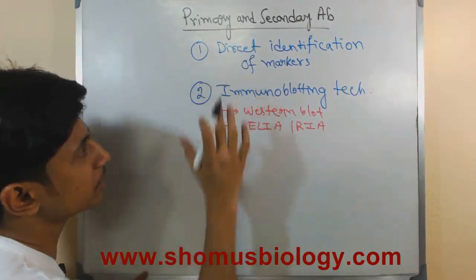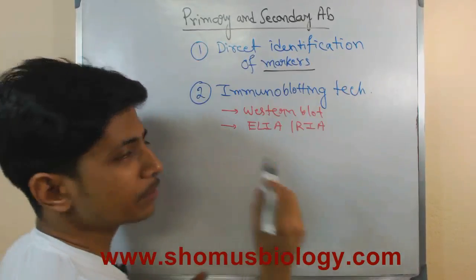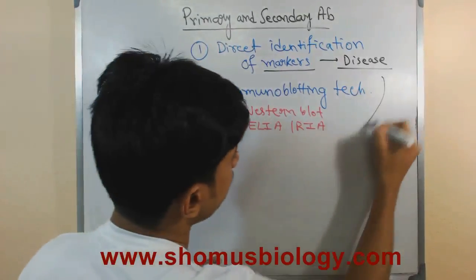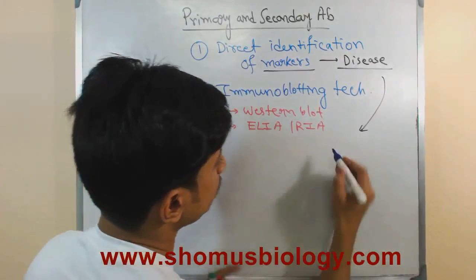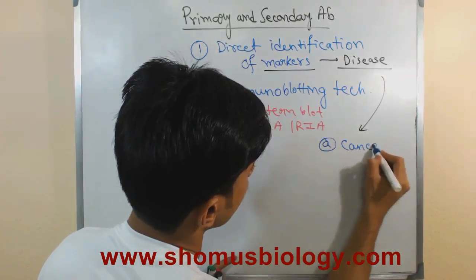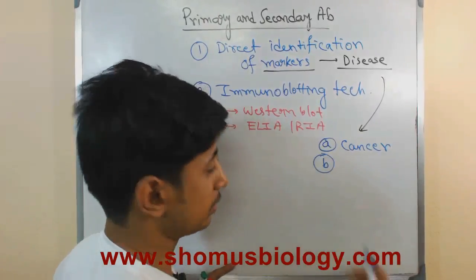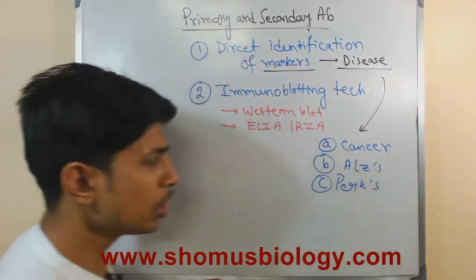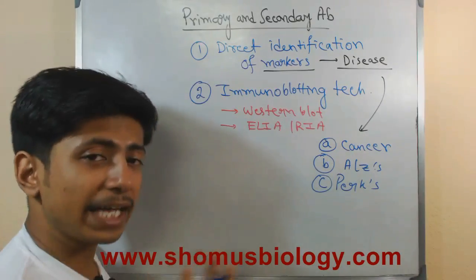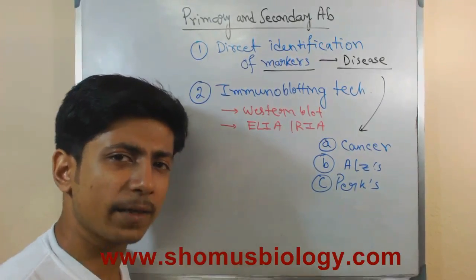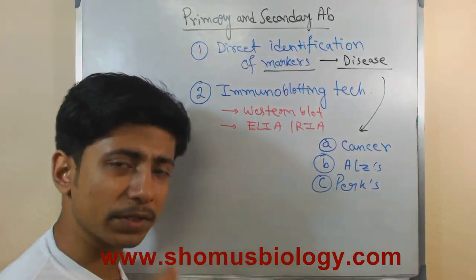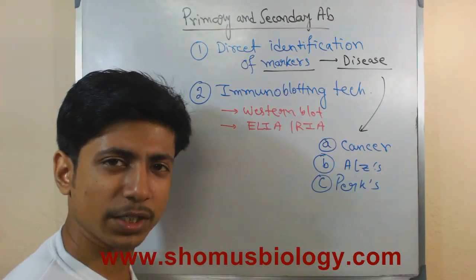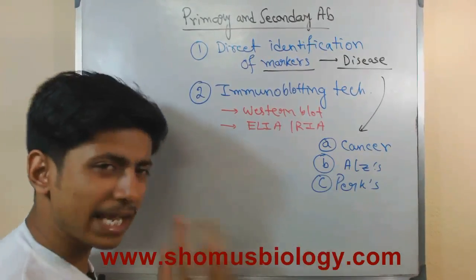In the case of direct detection of markers, we usually need to detect disease markers. The diseases we are talking about can be cancer, Alzheimer's disease, Parkinson's disease, and so on. In these diseases, a direct antibody is found very effective to mark the diseased cell and the specific moiety of that cell that contains the signature sequence responsible for the disease.